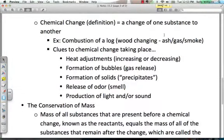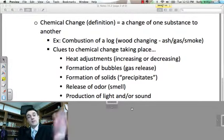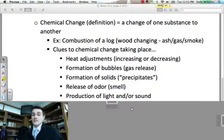A chemical change, by definition, is a change of one substance to another. One substance to another. So like combustion, flammability. A piece of wood is flammable. It can actually ignite in flames. It changes from wood to ash, gas, and smoke. That's a classic example of a chemical change.